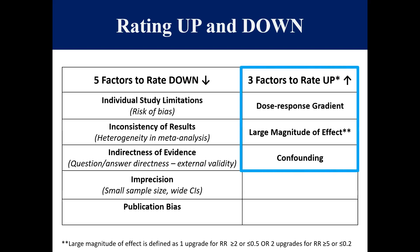Lastly, for the factors to rate up — these are typically assessed for SRMAs of cohorts, and even then are very rare in nutrition studies. Significant dose-response gradients could be judged as reasons for upgrade in SRMAs of trials if they provide compelling evidence according to the GRADE group. In the interest of time and complexity, we will not review these today.